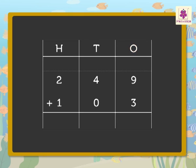Add the ones. That is, 9 plus 3 is equal to 12. Carry 1 ten to the tens column and write 2 in the ones column. Now, add the tens. That is, 1 plus 4 plus 0 is equal to 5. Now, add the hundreds. That is, 2 plus 1 is equal to 3.